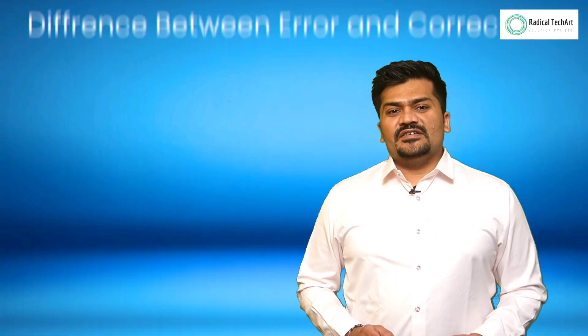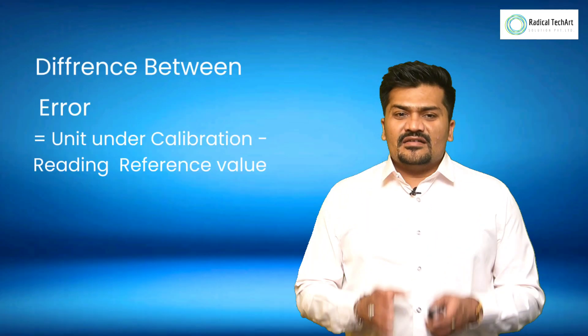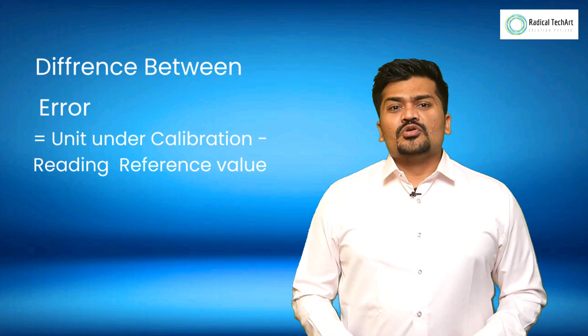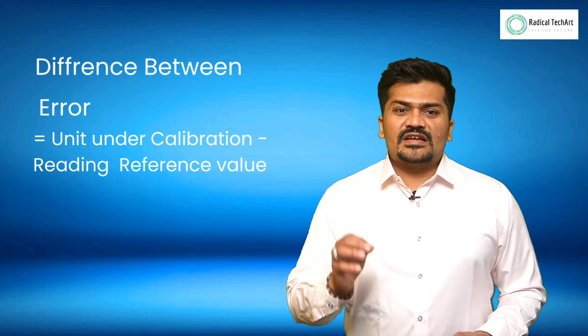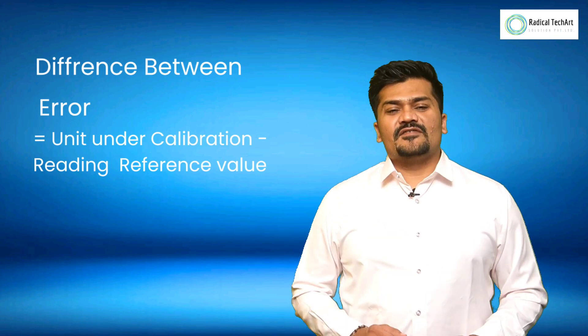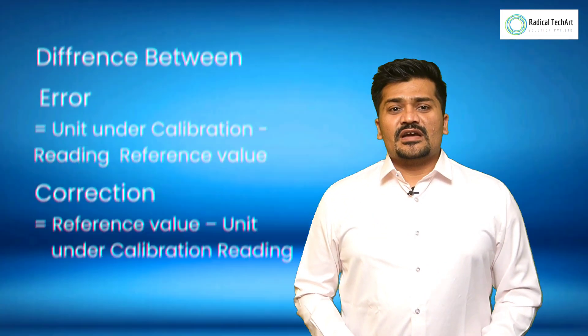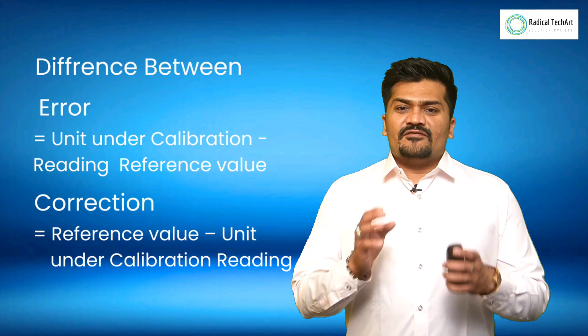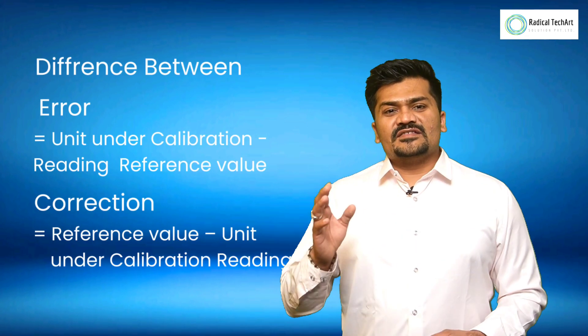The formula for error is: Error = Unit Under Calibration reading minus Reference value. And the correction is: Correction = Reference value minus Unit Under Calibration reading.